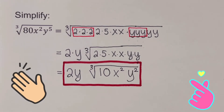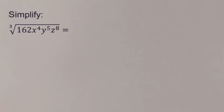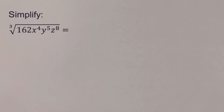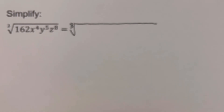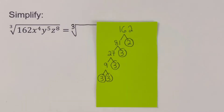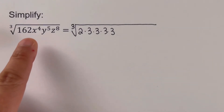Did you get the same answer? Now let's move on to the next example. Pause the video and try this problem on your own, then unpause and check your answer. The first step is to expand the given expression — this is a cube root. I'll expand 162 to its prime factors on the side. I also need to expand x to the fourth, y to the fifth, and z to the eighth.